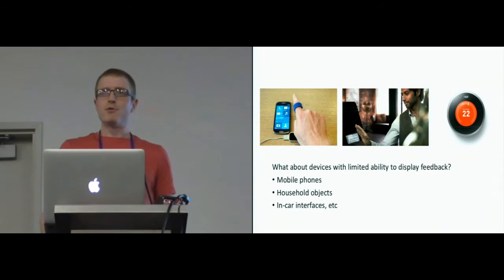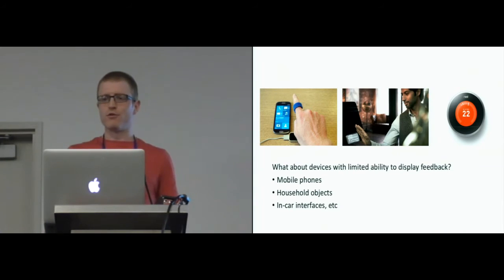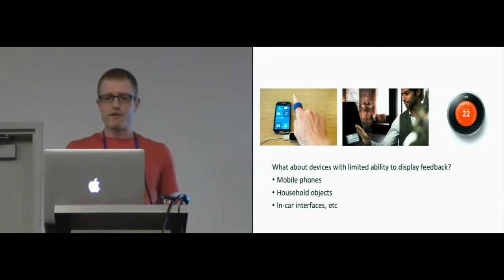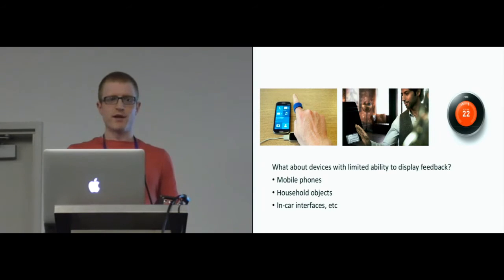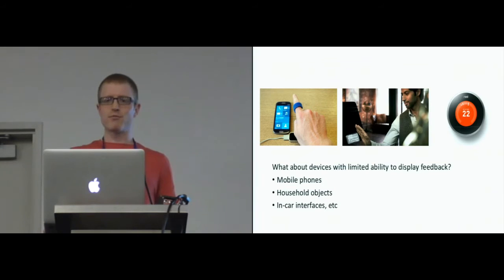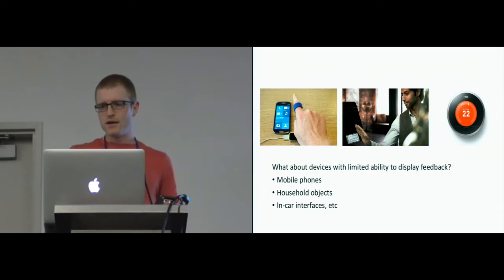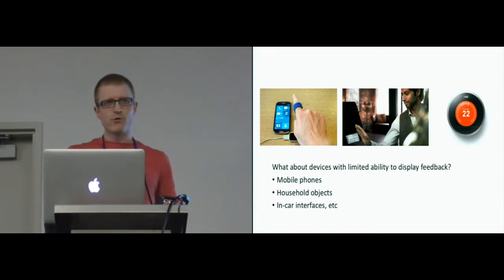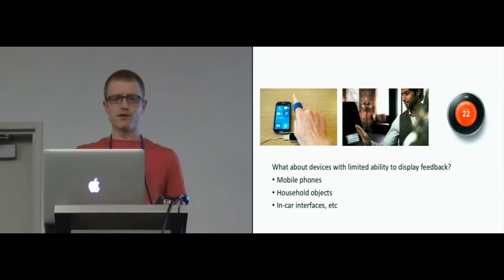But what about devices that are unable to give users that same level of feedback? Rich sensing capabilities are being added to increasingly smaller devices — like mobile phones and small household objects — and they have small screens or no screen at all on which to give users feedback. In the case of mobile phones, we can interact with them using gestures, but we already struggle to fit good interfaces on those small screens. Information there is already quite cluttered, so providing even more is going to add to that problem. Also, those small screens might be difficult to see from quite far away. Household interfaces might also have small screens or no screen, so we need to think of another way.